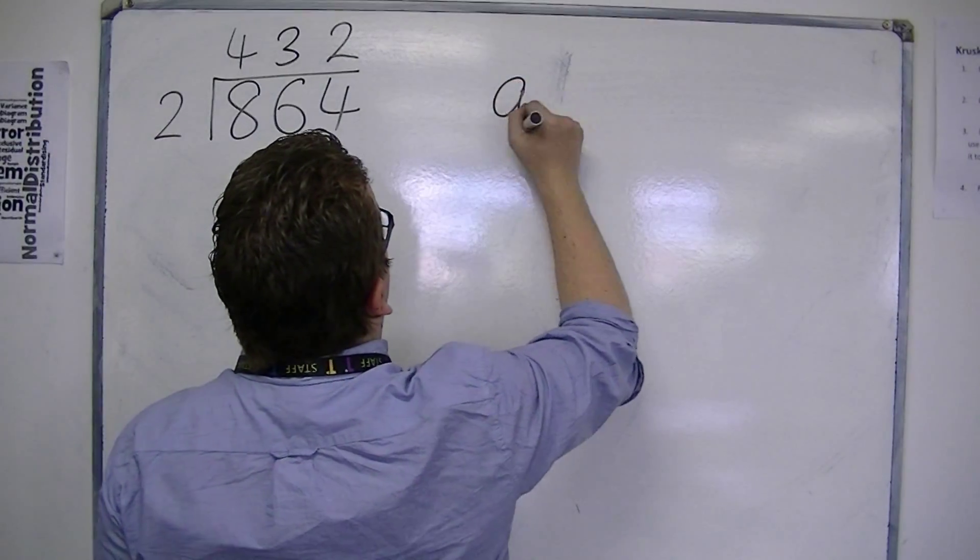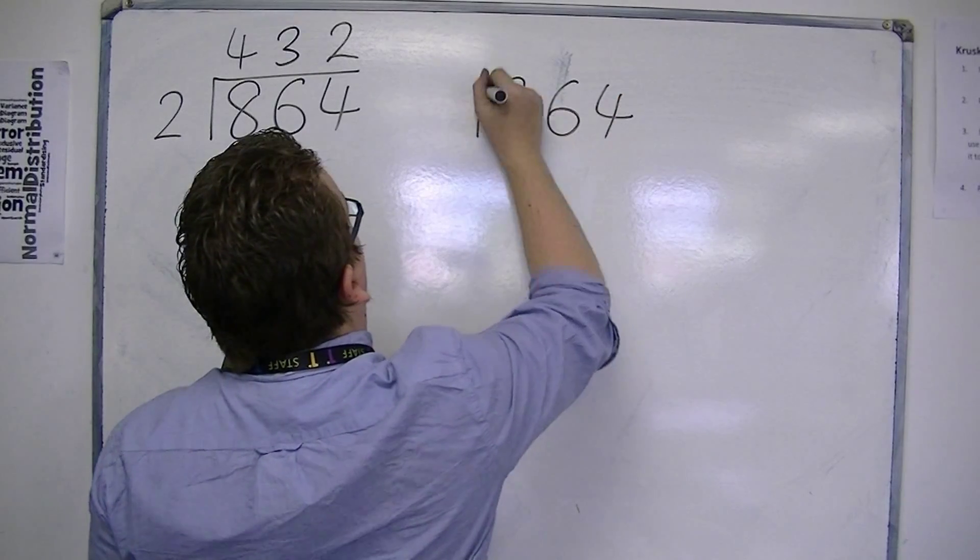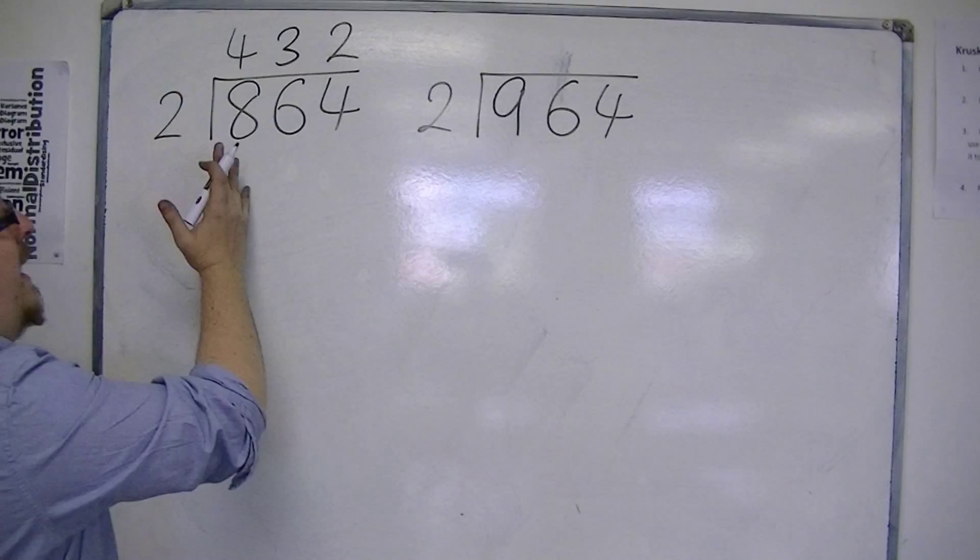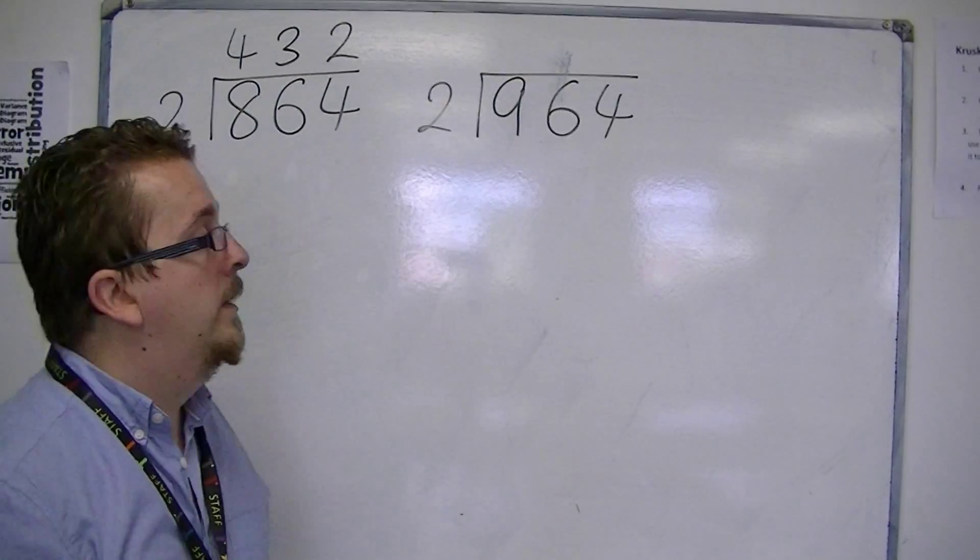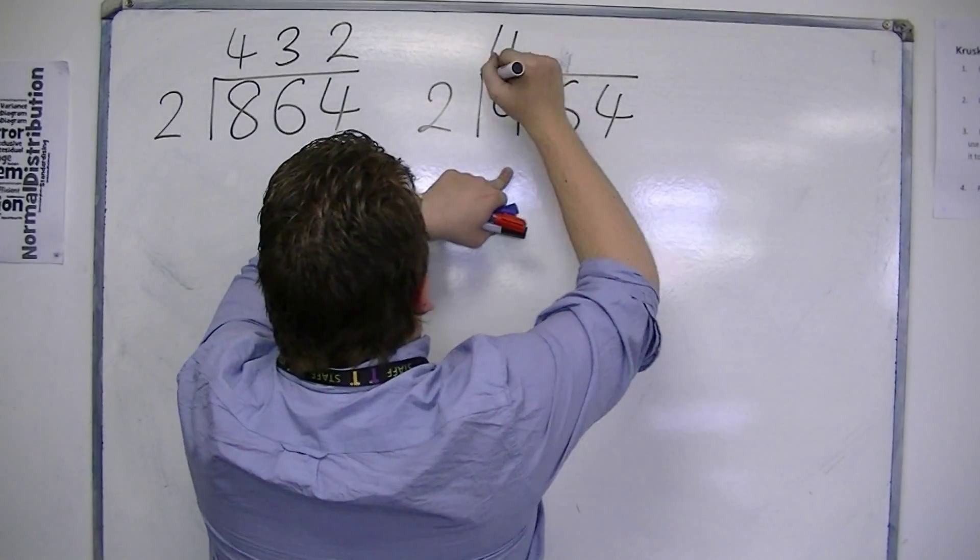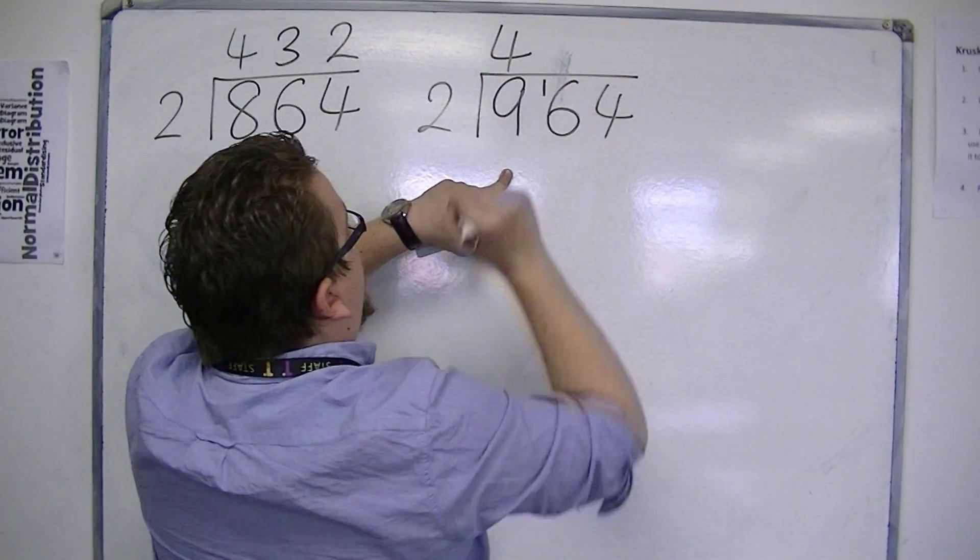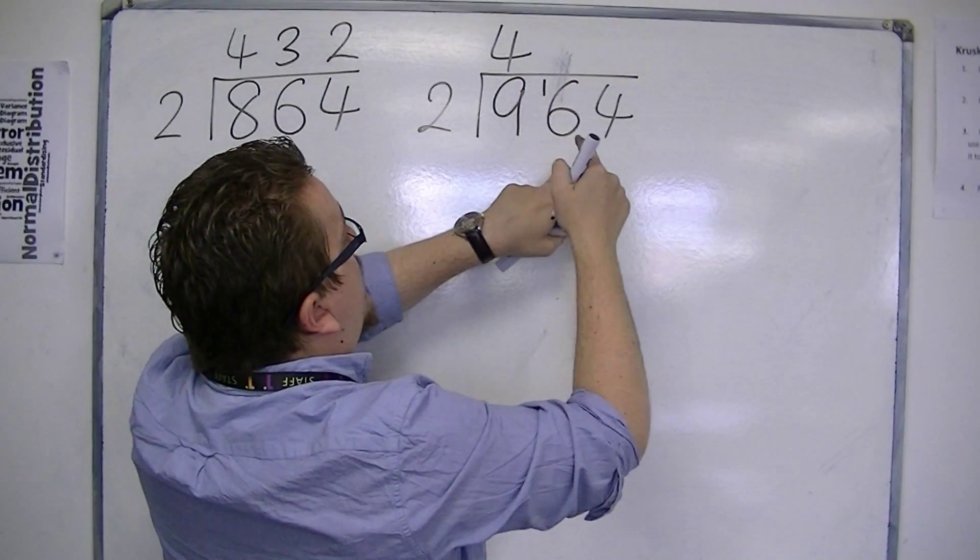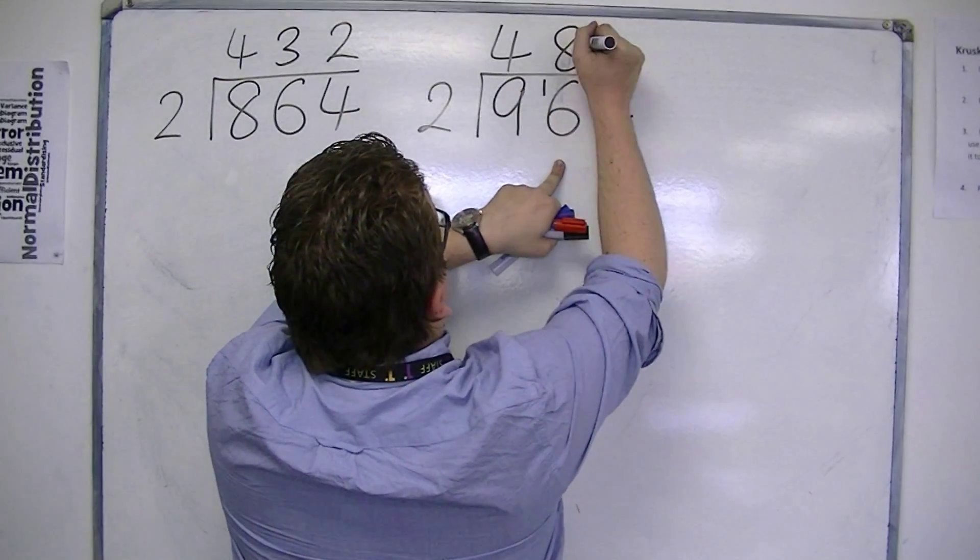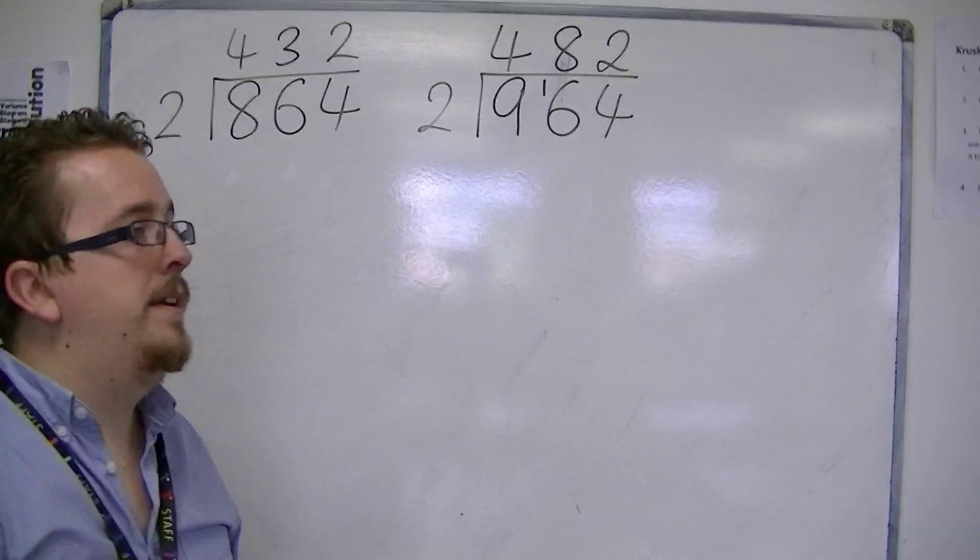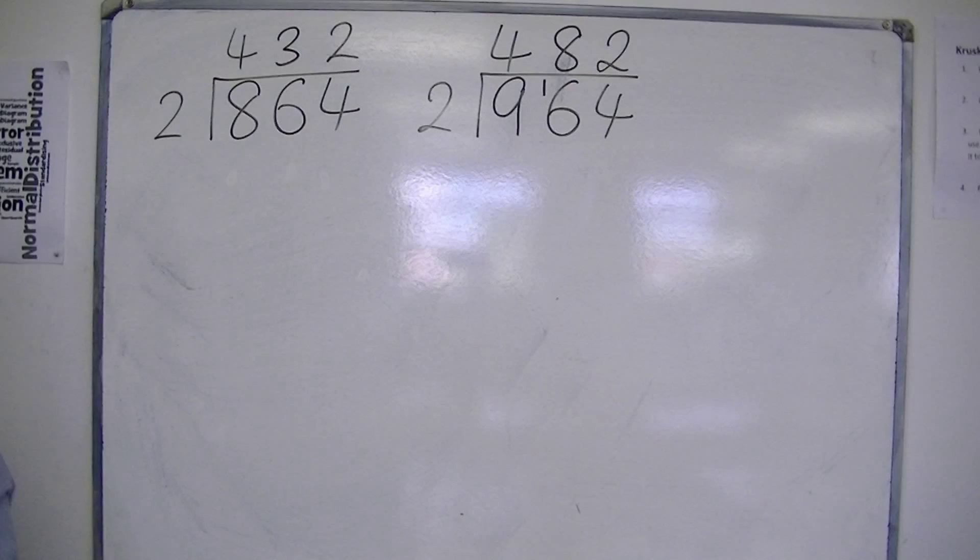If you had 964 divided by 2, I've just changed it from 864 to 964. We now have 2's into 9 still go 4, but we have 1 remainder. So now we're looking at 2's into 16, which go 8. And 2's into 4 go 2. So we have 482 this time.